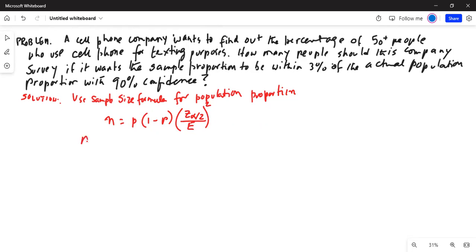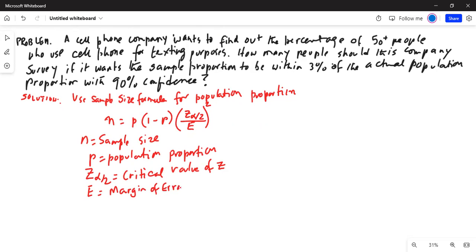Now I will explain the terms. n is your sample size, p is your population proportion, z alpha by 2 is critical value of z, and E is margin of error, which is actually p hat minus p, where p hat is sample proportion.